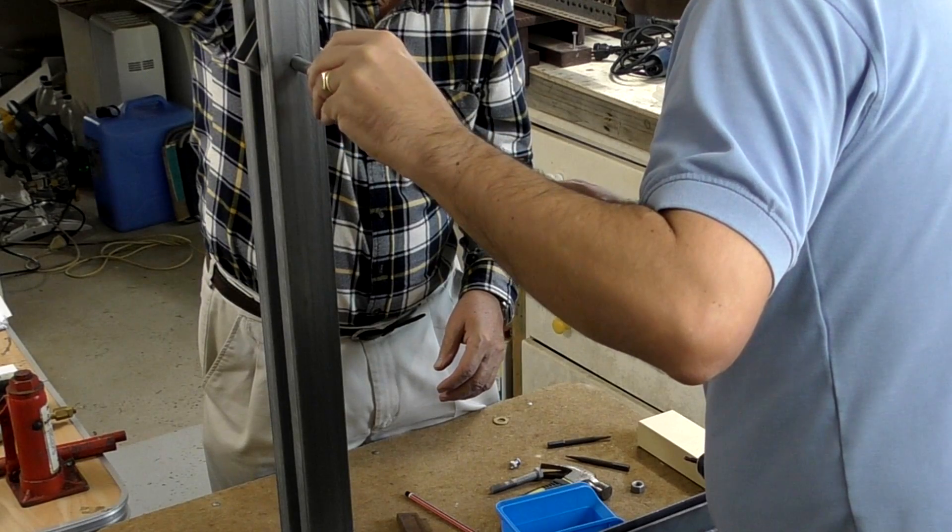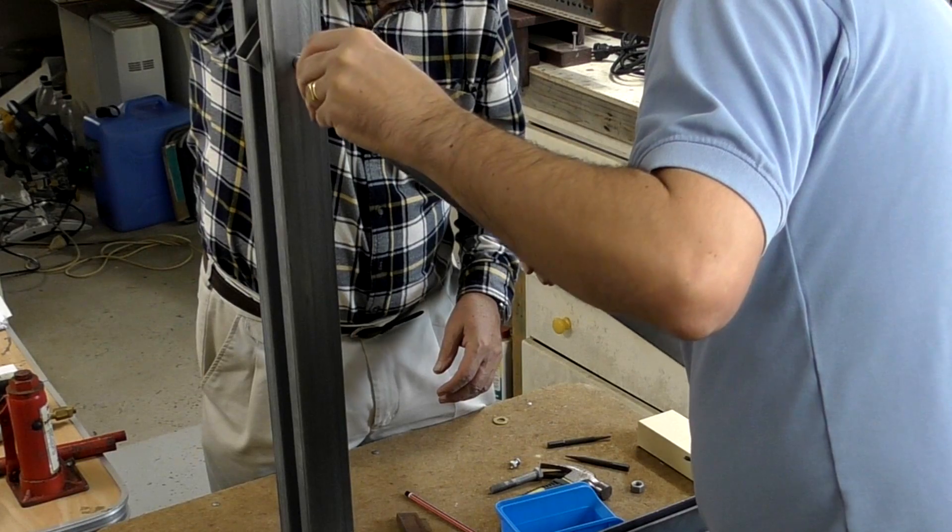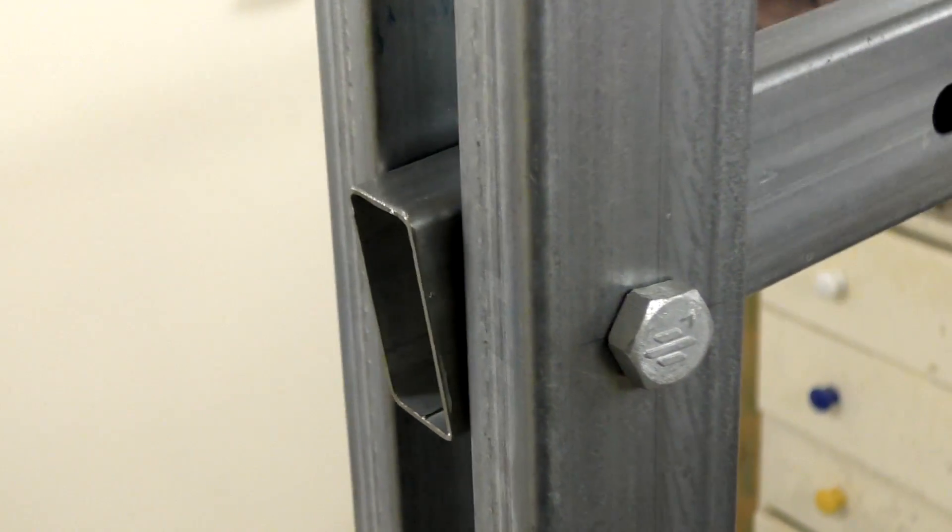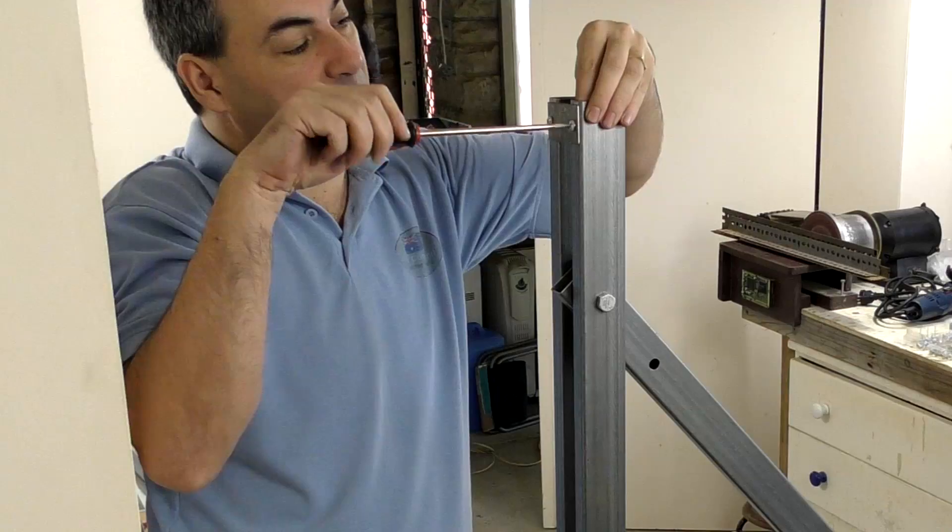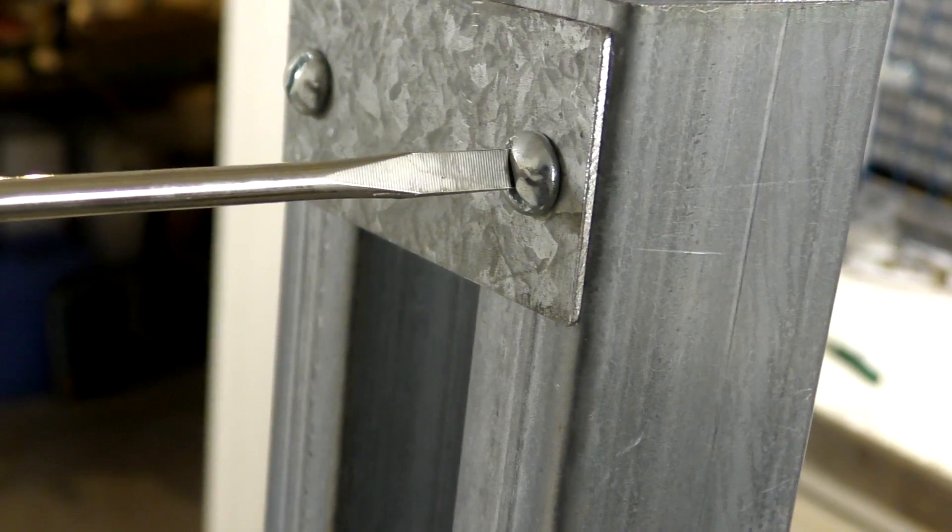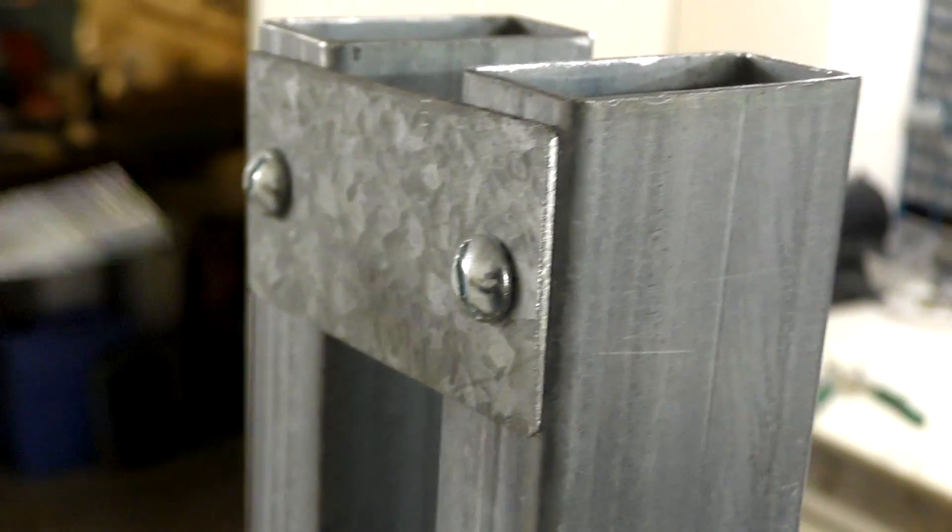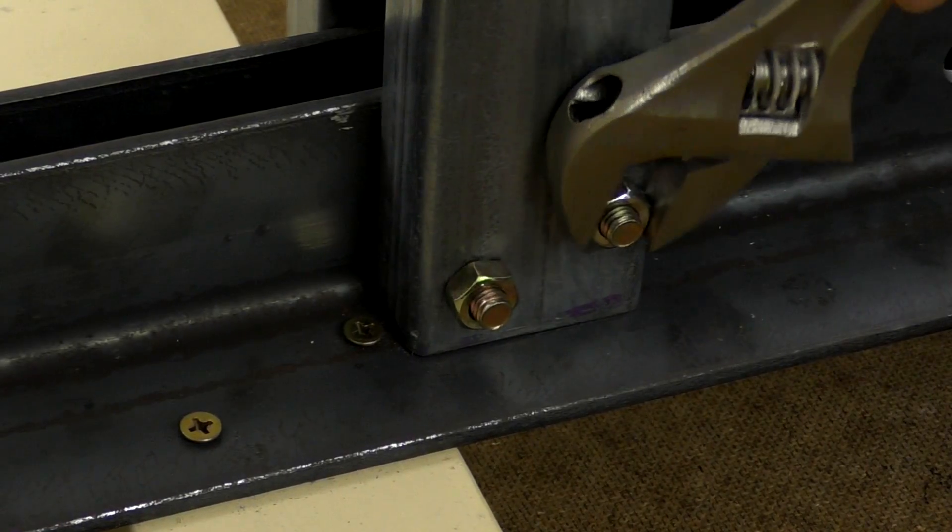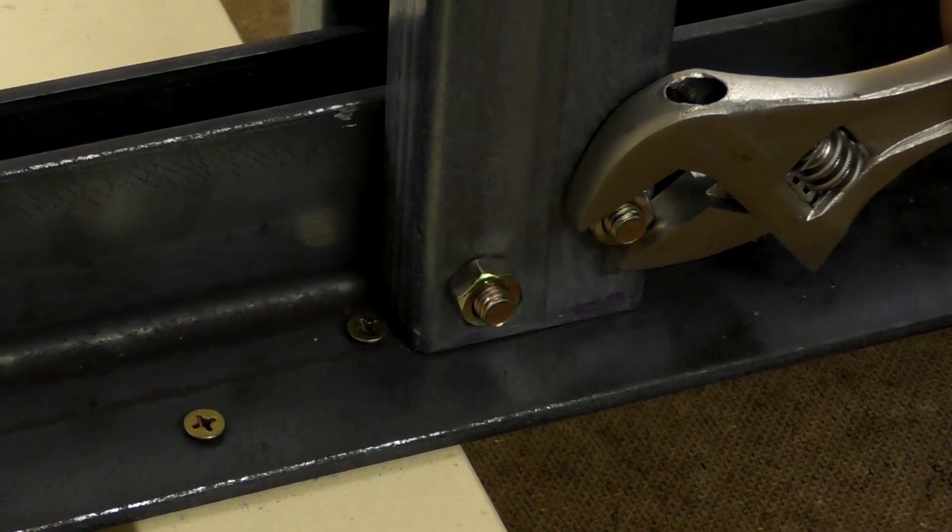The lever gets attached to the supports with an M12 bolt and we add a small bracket at the top to keep the supports together. We've inserted wooden blocks inside the RHS so that the bolts don't crush it when we tighten them.